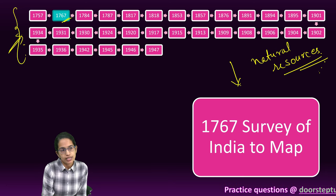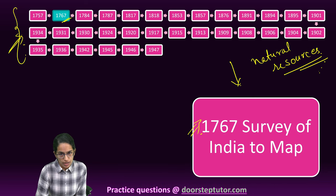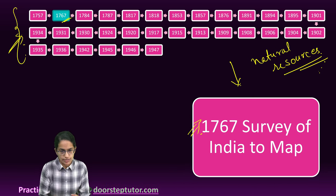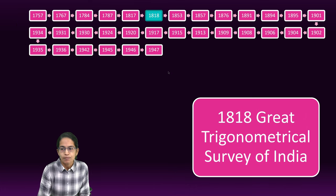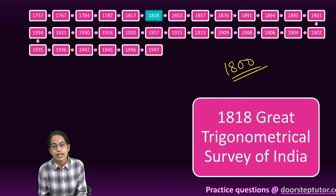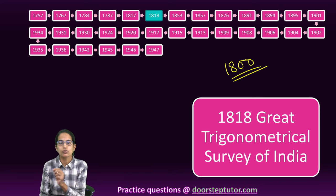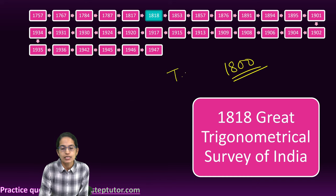From this timeline, we understand that in 1767 the Survey of India was established to map natural resources. Later on, in 1800, a survey was conducted to map India using second-hand instruments brought from Britain. This survey was known as the Trigonometric Survey of India.